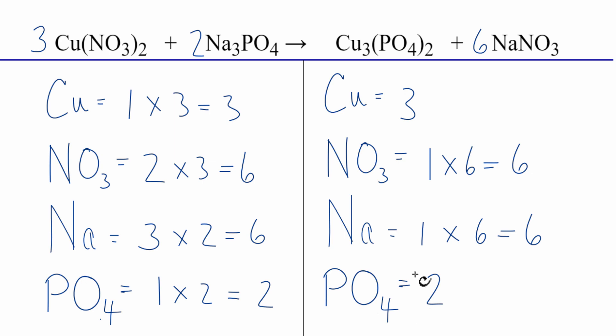This equation is balanced. You can see how helpful it is when we consider the nitrate as one thing since it stays together, or the phosphate since it stays together. We count it as one thing. It makes the balancing a lot easier, and you're less likely to make errors.